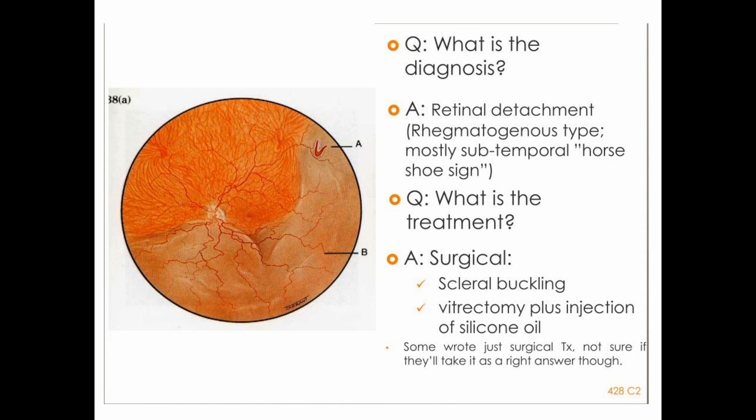Look at the picture — here is a small tear called a U-shaped or horseshoe-shaped tear, and this is retinal detachment. We will call it rhegmatogenous retinal detachment. 'Rhegma' means hole — there is a hole in the retina, and the retina is detached because sub-retinal fluid passes through this hole and detaches the retina.